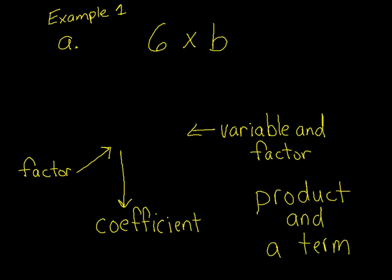So let's go on to example 1. Our job is to write these expressions with the least amount of symbols possible. So our first one, we have 6 times B. So we can simply write it as 6B. And I have some notations here. You'll need to pause the video and get them written down quickly.